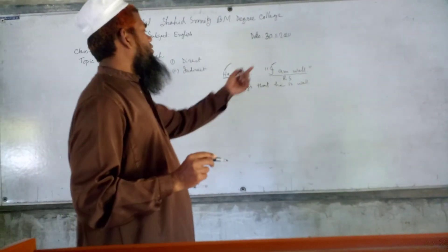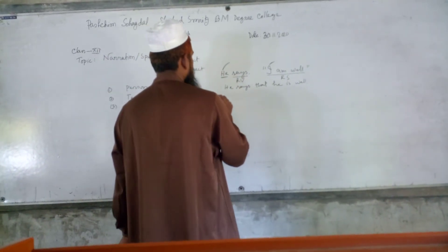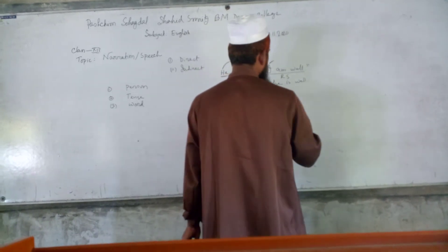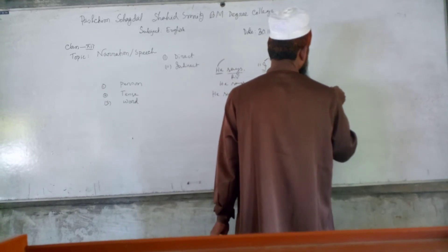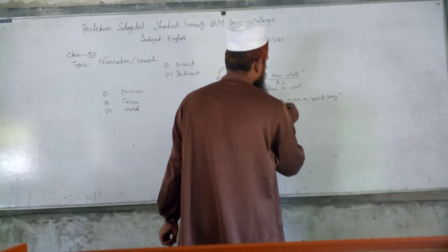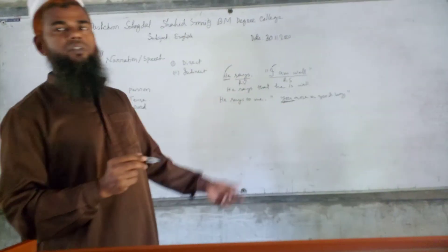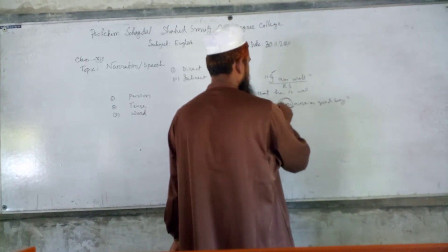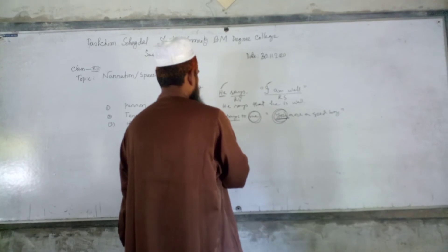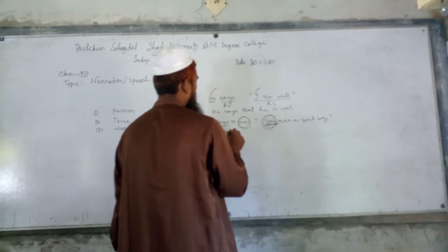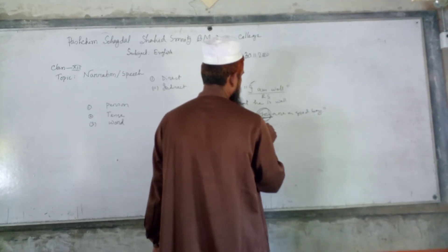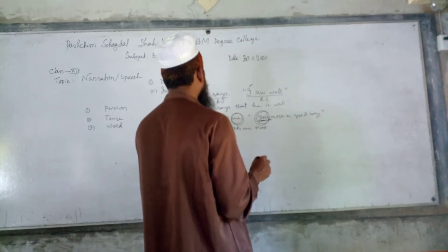For the second person rule: He says to me, 'You are a good boy.' My dear students, you can see that there is a second person in the reported speech. If there is a second person, this second person will be changed according to the object of the reporting verb — that is, 'says to' or 'tells me.'